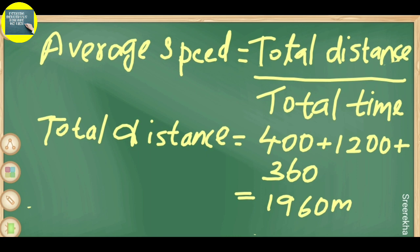Total distance equals 400 plus 1200 plus 360, which equals 1960 meters.